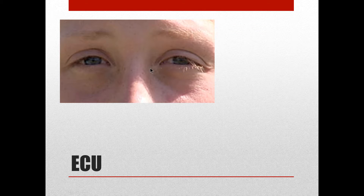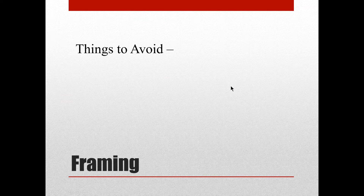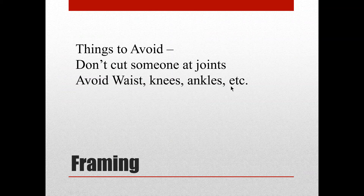In the extreme close-up example, there's no neck and even part of the chin and top of the head are cropped — that's what makes it extreme. The most common confusion is the scene from The Shining where he sticks his head through the door — people call that a close-up, but it's really an extreme close-up because all you can see is his face. Things to avoid: don't cut at joints — avoid waist, knees, ankles.